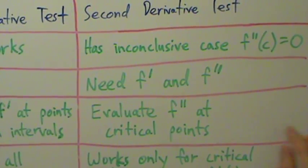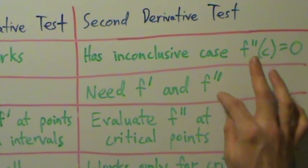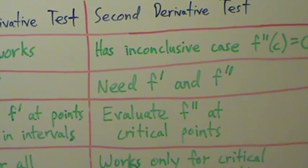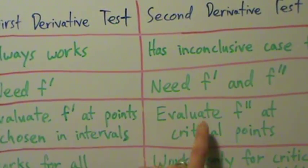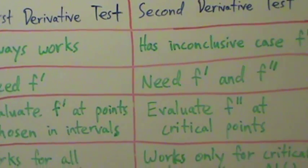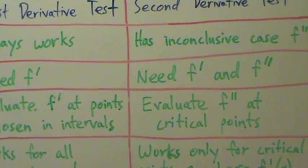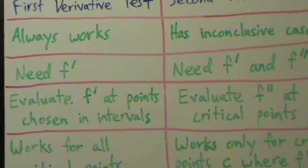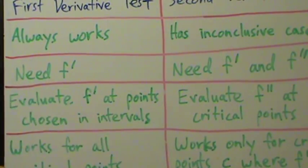For the second derivative test, you evaluate f double prime at the critical points, which generally is a little bit nicer. Finding the second derivative is an extra step, but usually not that bad. It could be kind of messy sometimes, but you don't have to simplify it — you just want to know: is it positive, negative, or zero? Also, for the second derivative test you evaluate at the critical points, while for the first derivative test you evaluate f prime at points you choose in the intervals.